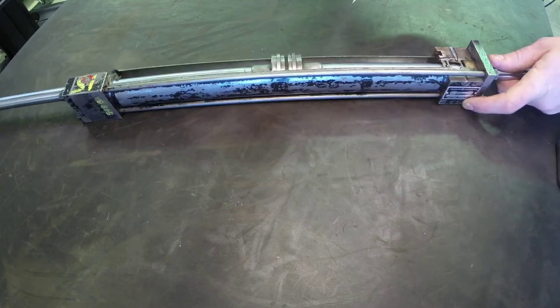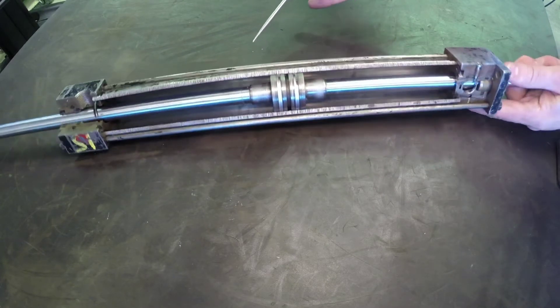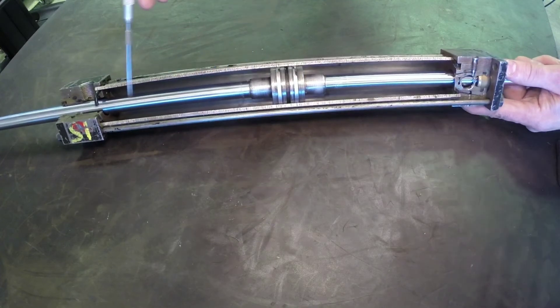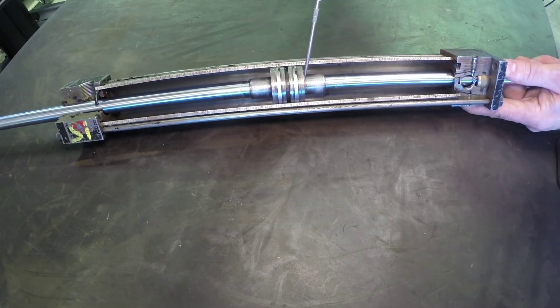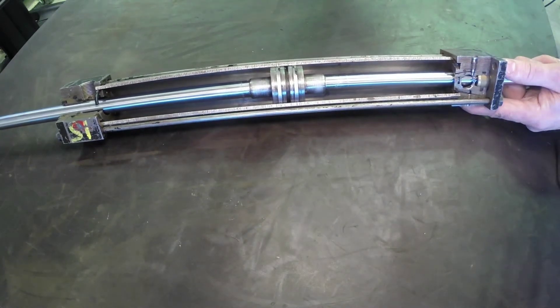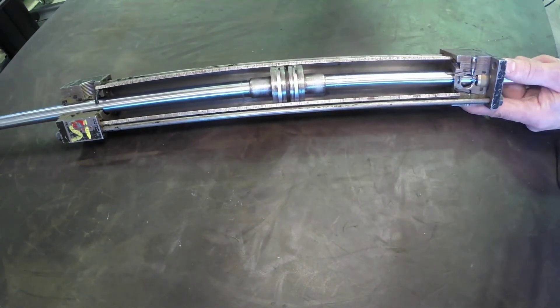Because our piston is equal sized on both sides, the force created to go left and right will be equal. This is a very common cylinder to see on a steering axle of a forklift. We would expect a forklift to steer at equal speed and equal force in both directions, so this cylinder works really well for that.